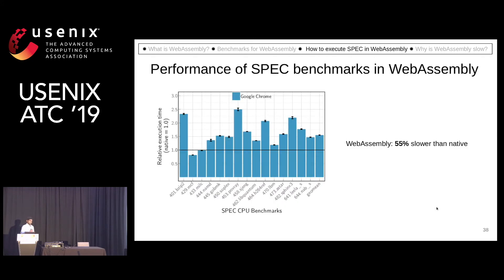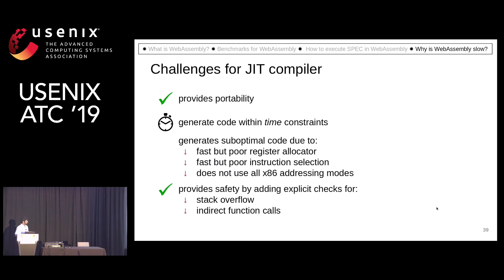So finally, we are able to execute WebAssembly. In Google Chrome, it is 55% slower. Now let's look at why.